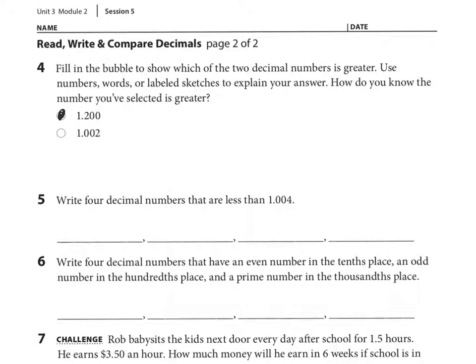And now you're going to explain that in several different ways. You can show pictures, words. We're going to move on to number 5. Write four decimal numbers that are less than 1.004 thousandths. Okay, so there's many different decimal numbers that are less than 1.004 thousandths. Really, any decimal that starts with 0 in the ones place is going to be less than one whole. So all those decimal numbers are less. Because there's a 0 in the ones place.